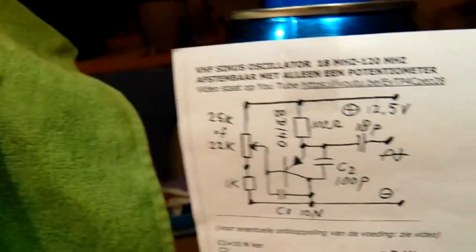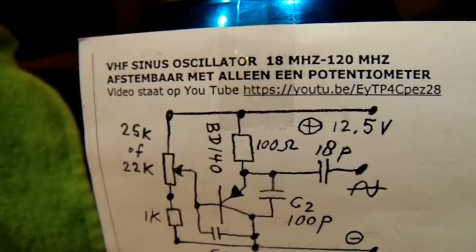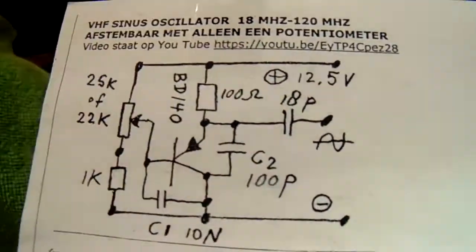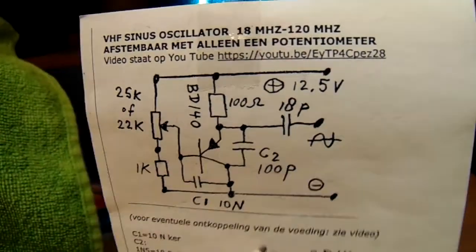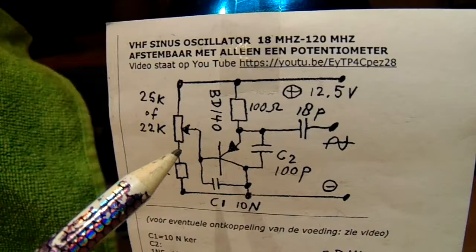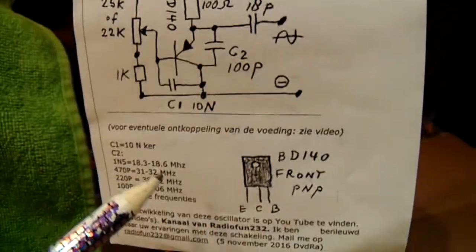I want to demonstrate it with this circuit that I've also published on YouTube. A schematic from an oscillator that can be set to different frequencies with only one pot meter to these frequencies.